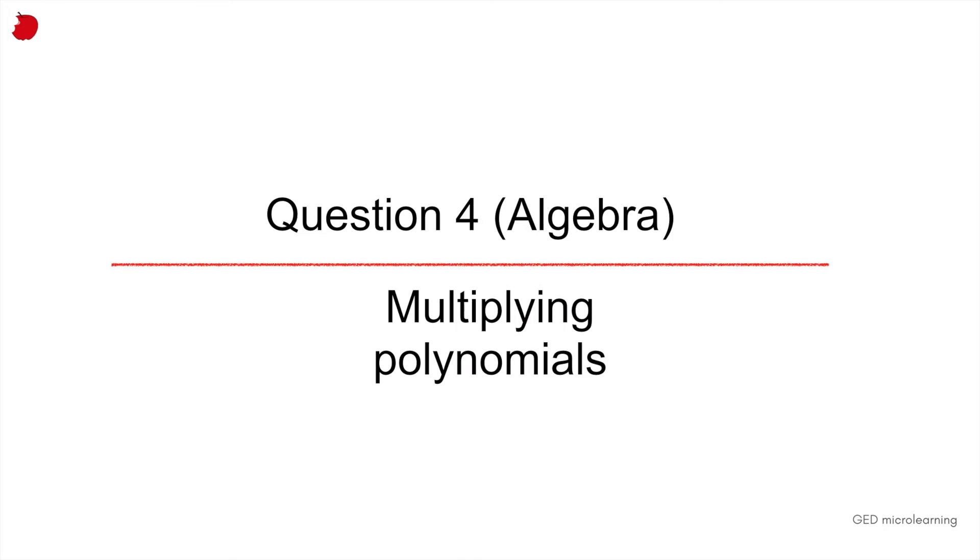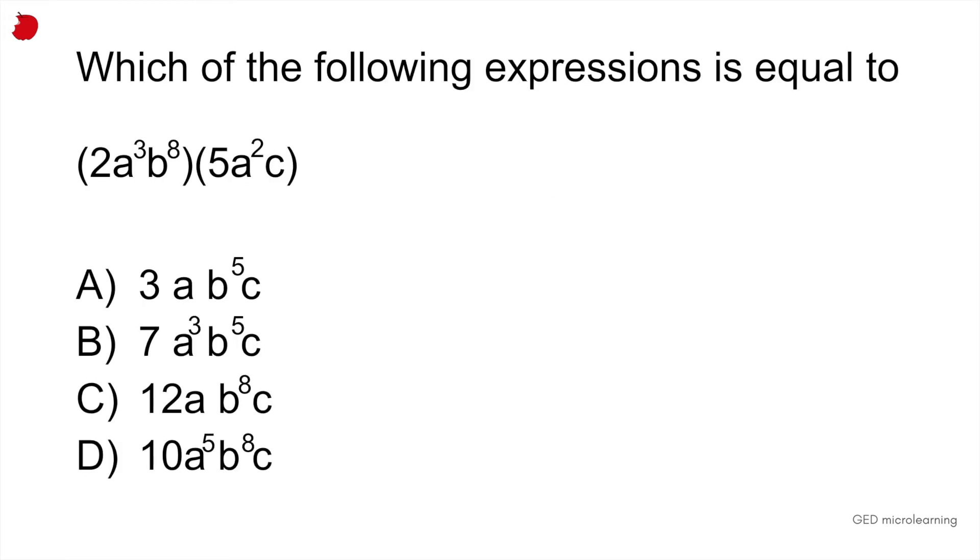Question four is a question that involves multiplying polynomials. And so far, I don't think we've done this yet. We've added polynomials and we've subtracted, so this is a new type of problem. And it's asking you which of the following expressions is equal to 2a raised to the 3rd power, b raised to the 8th power, multiplied by 5a squared c.